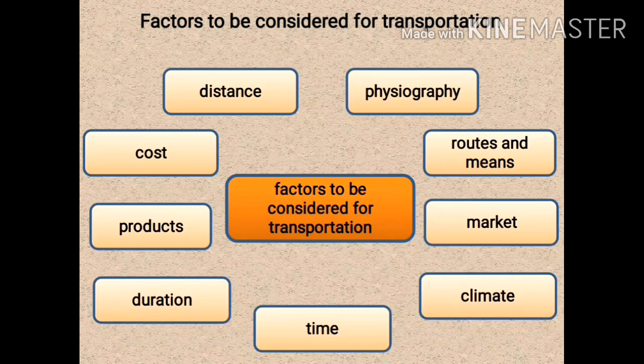The next factor is market. In urban areas like Pune, Mumbai, or Nagpur, markets are more developed — goods are available and sold in plenty. However, not all goods sold in these urban markets are manufactured there; many have to be imported from other states or districts. Therefore, transportation is more developed in these areas because they are connected to many other states and districts. Market is also an important factor to be considered for transportation.